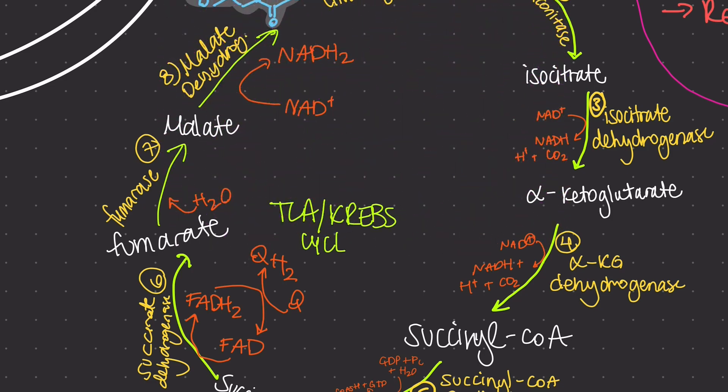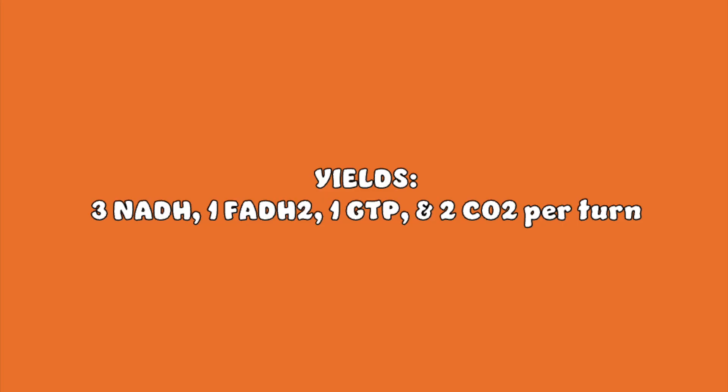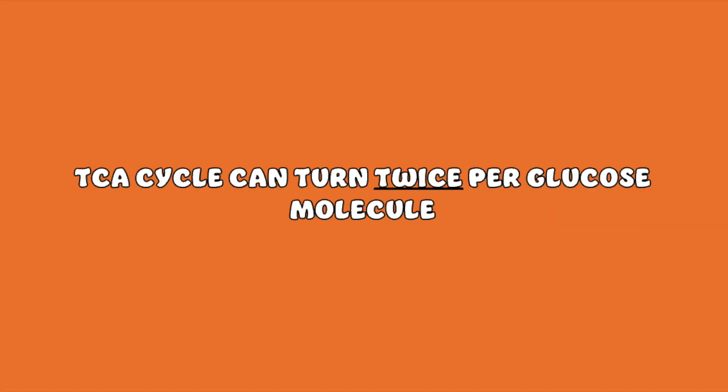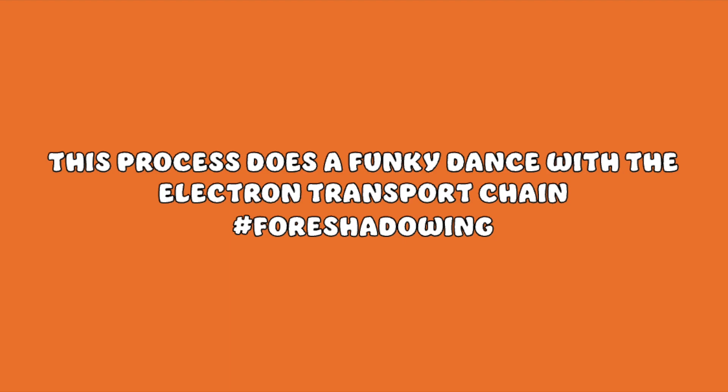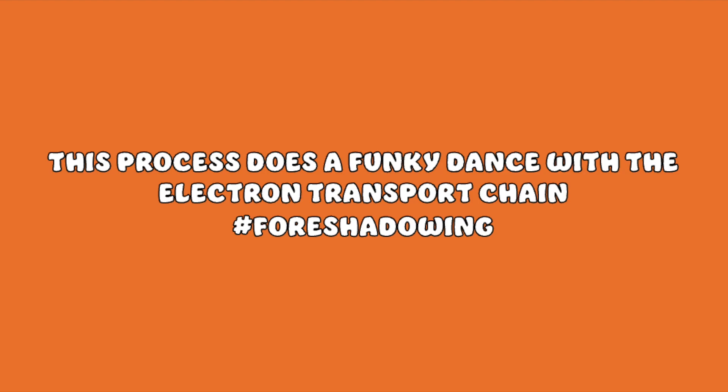Here are some important facts to remember. The TCA cycle produces 3 NADH, 1 FADH2, and 1 GTP, plus 2 molecules of CO2 per turn. The cycle can turn twice per glucose molecule, as each glucose molecule produces 2 molecules of acetyl-CoA. The NADH and FADH2 produced are used in the electron transport chain to produce ATP. The cycle is regulated at the steps catalyzed by citrate synthase, isocitrate dehydrogenase, and alpha-ketoglutarate dehydrogenase.